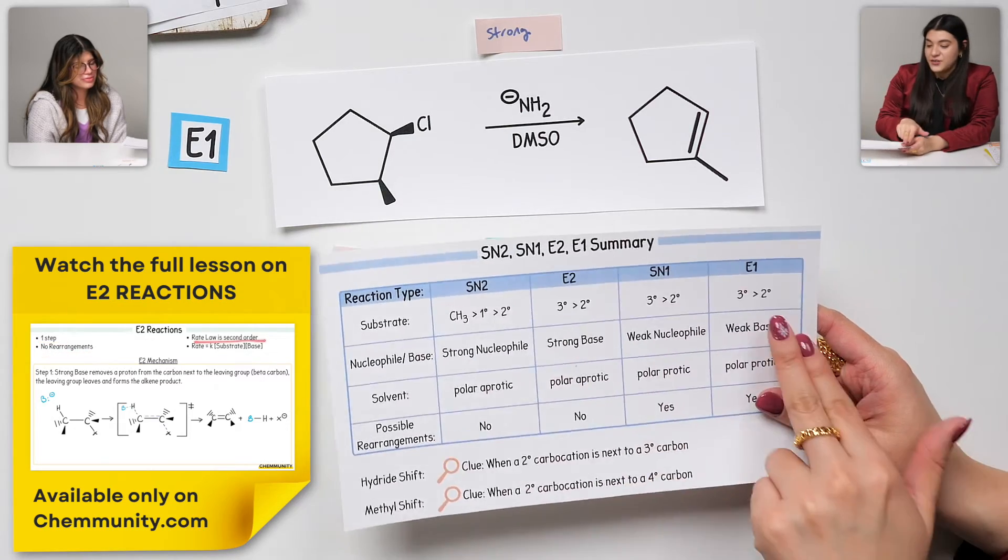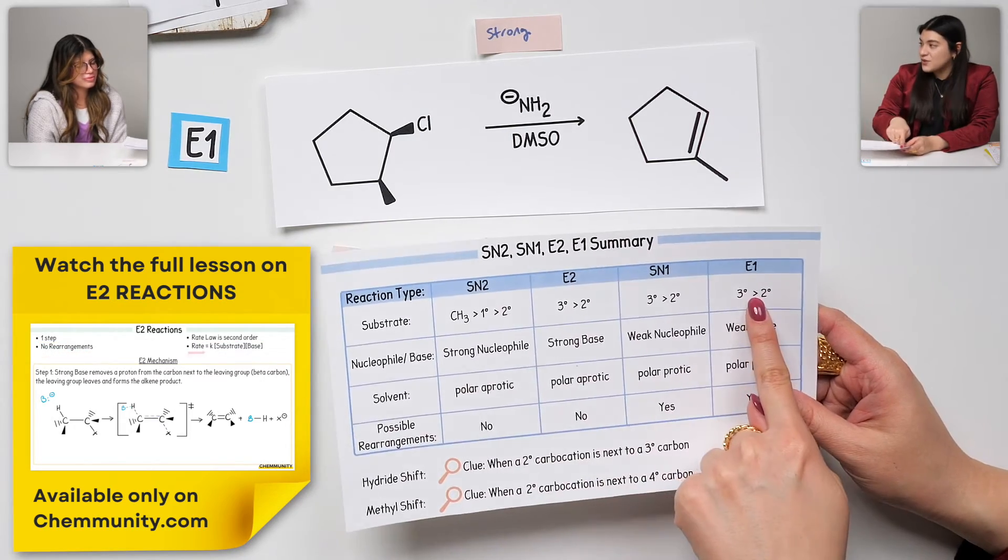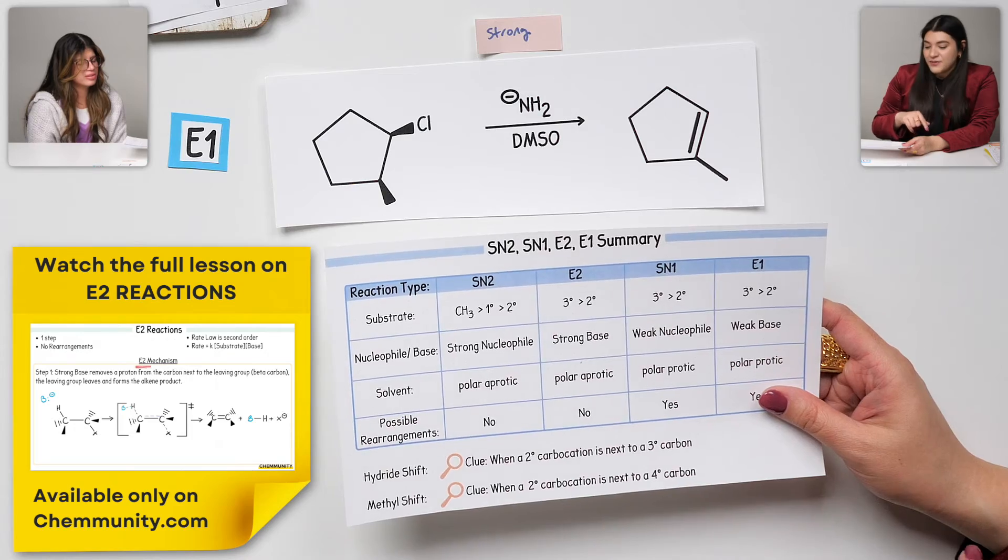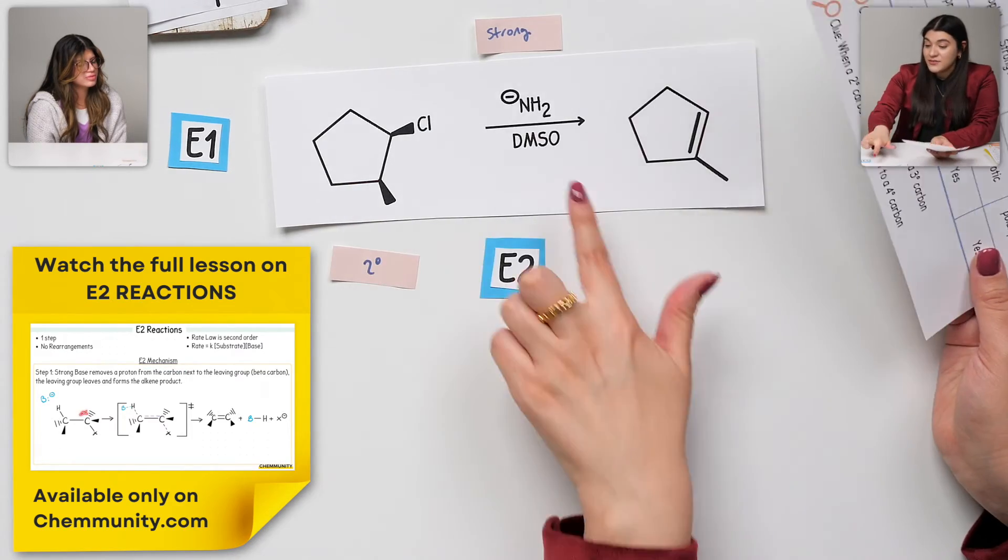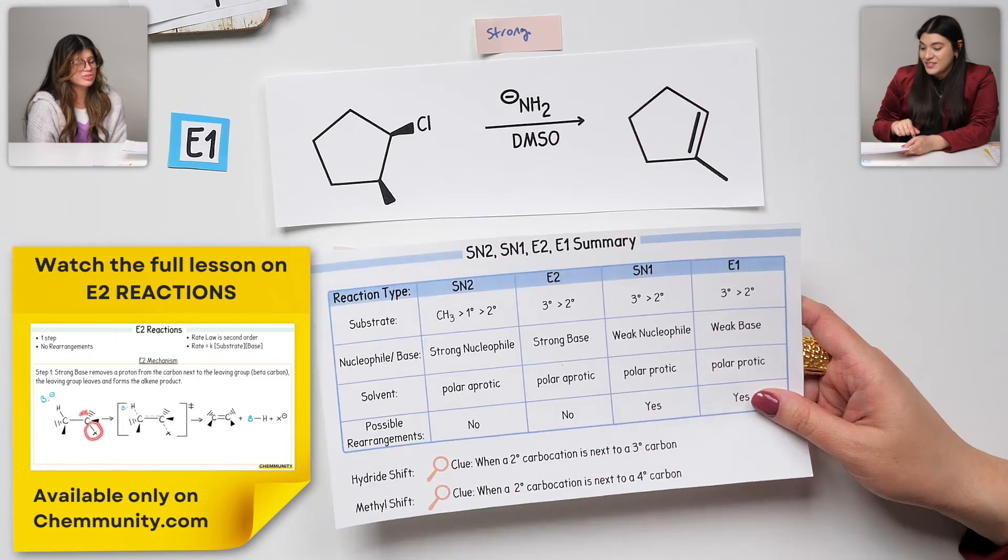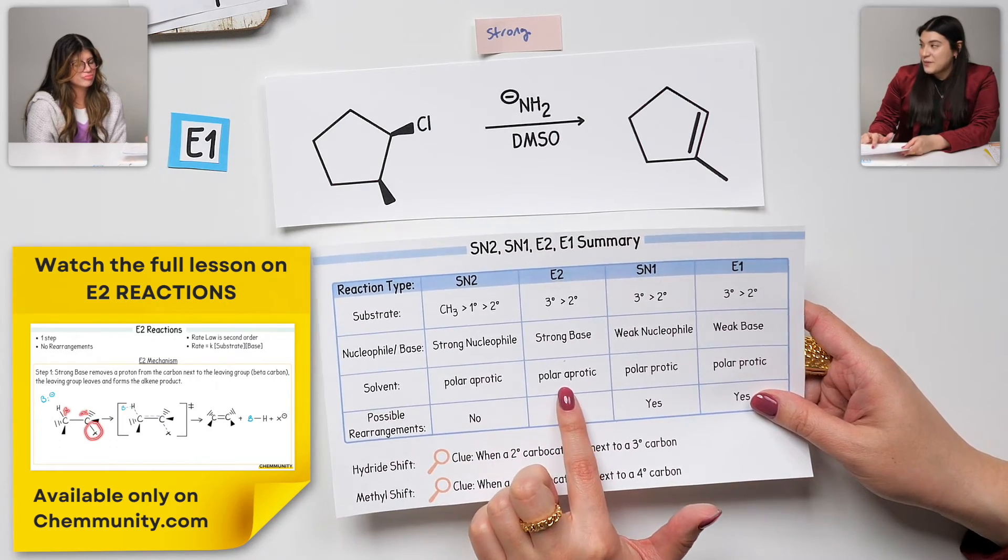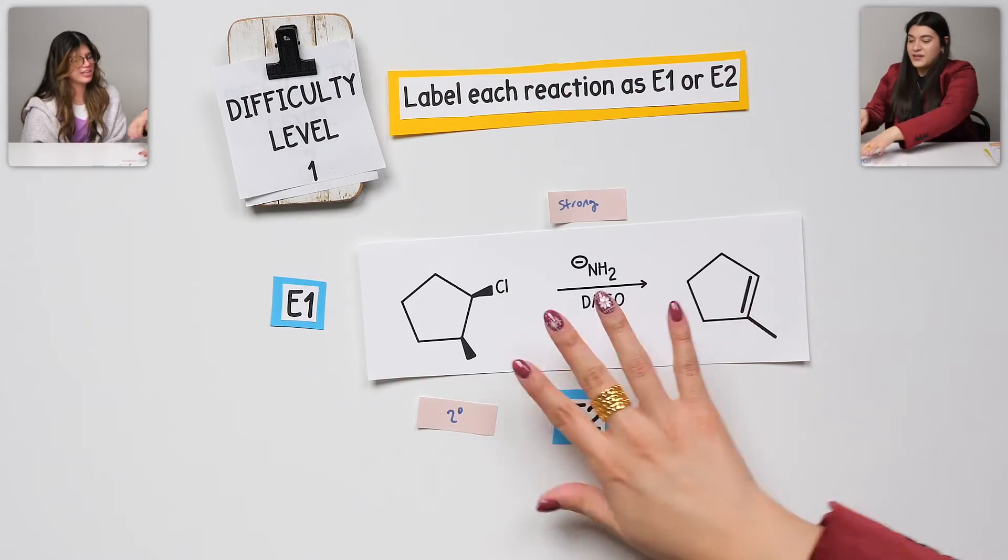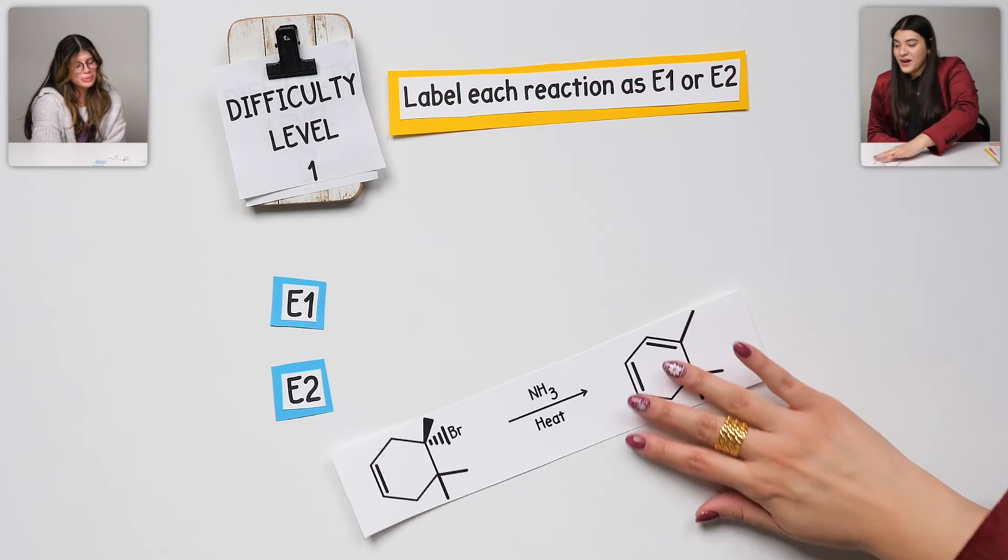The main reason is because that is a strong base. That's really it. I know that for E2 and E1, it's really the same sort of substrates that we're going to have. Main difference is going to be the strong base and weak base. Plus, we could have noticed the type of solvent that we had that would have been aprotic.